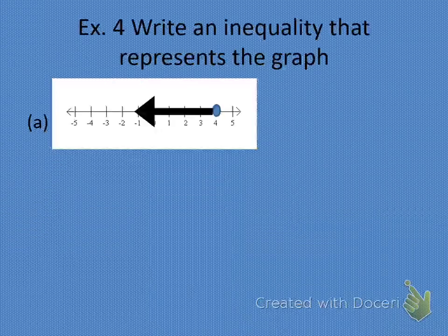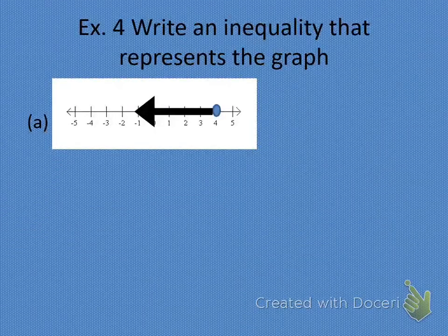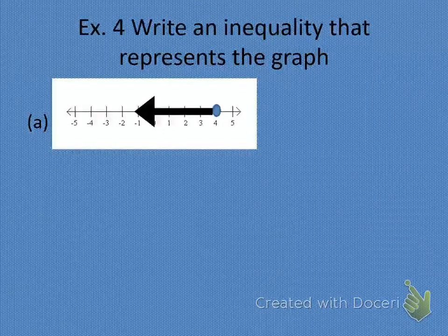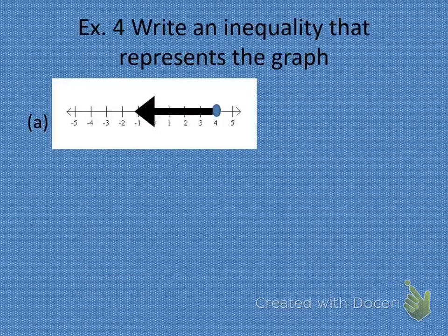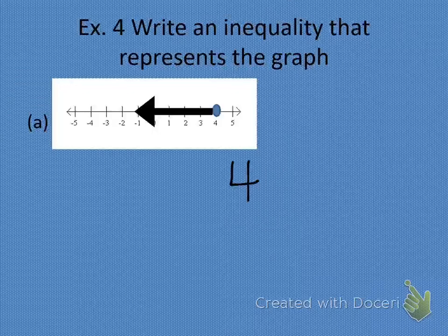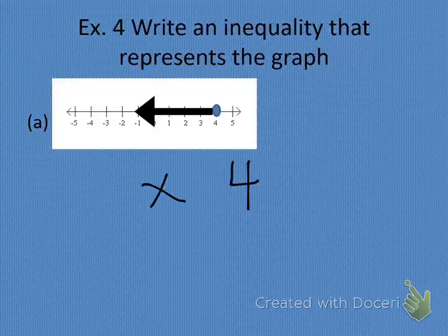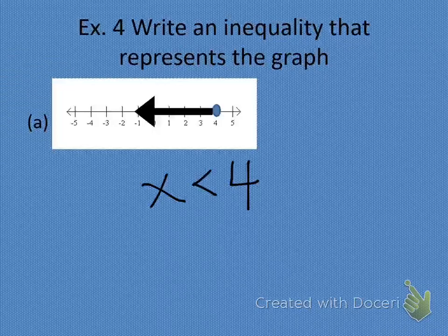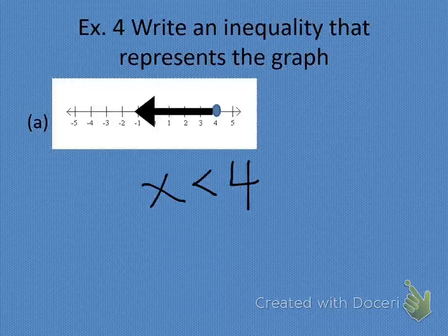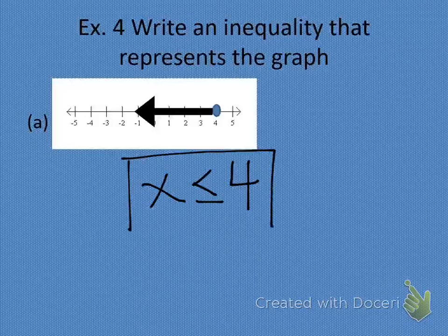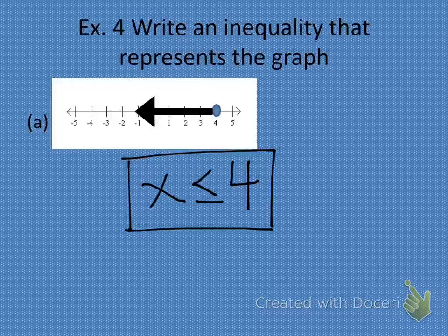Lastly, can you look at this graph and write an inequality? Where would you start? At 4. I find the number with the circle and write it down. Since there's no variable given, I'll pick x and put it to the left of 4 since we like the variable first. The solutions are going less than 4. Is it less than or less than or equal to? The circle is closed, so x is less than or equal to 4. That is Lesson 2.1.